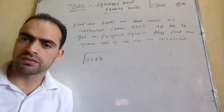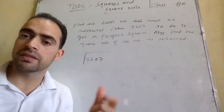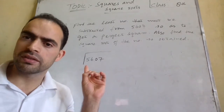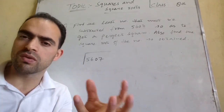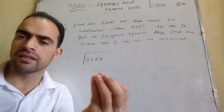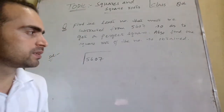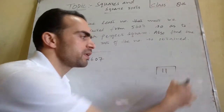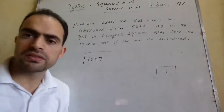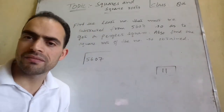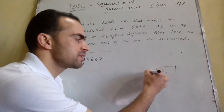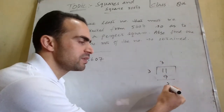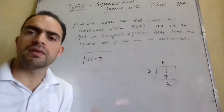Before doing this question, let's take a small example. Take the number 11. Is 11 a perfect square? No. Why? Because 3 × 3 = 9. Whenever a remainder remains, it means the given number is not a perfect square.